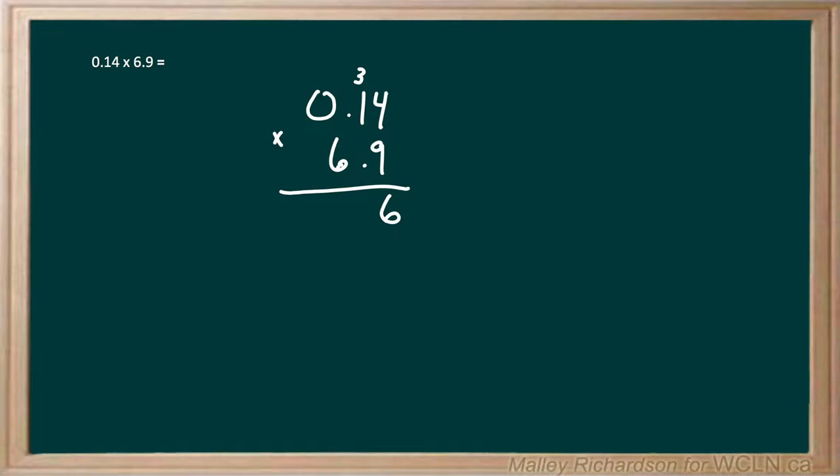Now we have 9 times 1, which gives us 9, and then 9 plus the 3 that we carried gives us 12. So we bring the 12 down here and carry the 1 up to the next column. Now we have 9 times 0, which gives us 0, but 0 plus the 1 that we carried gives us 1. So we write the 1 down here.